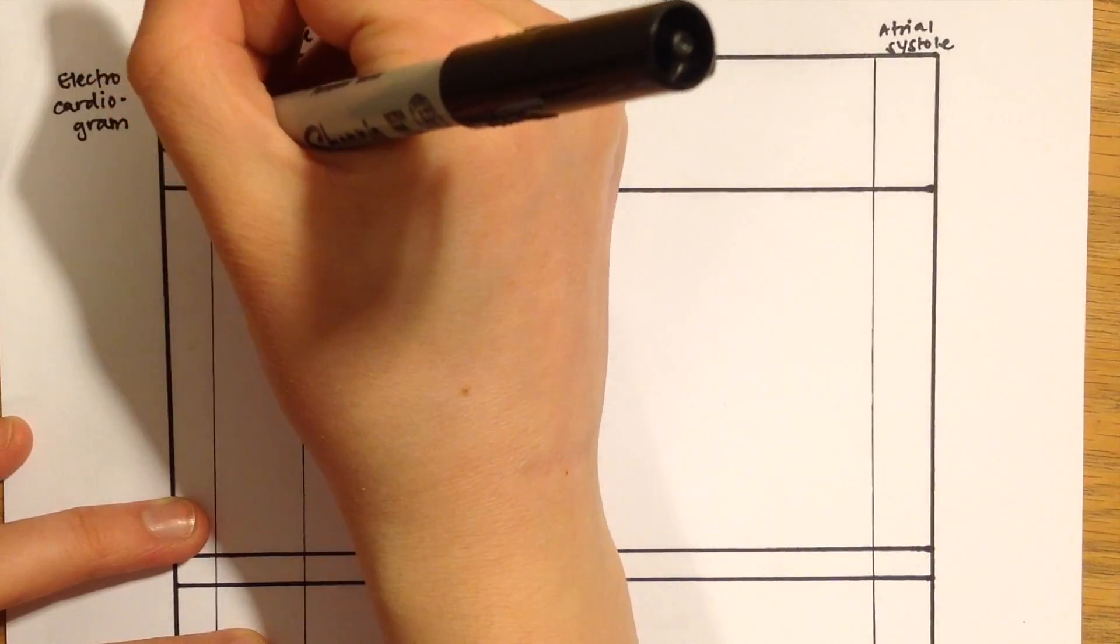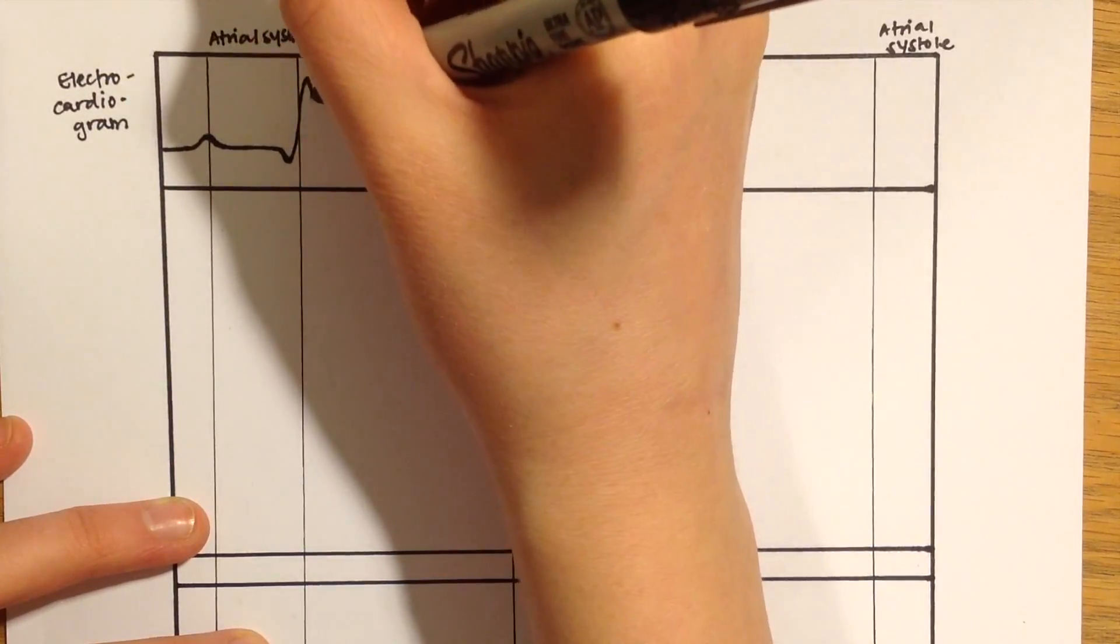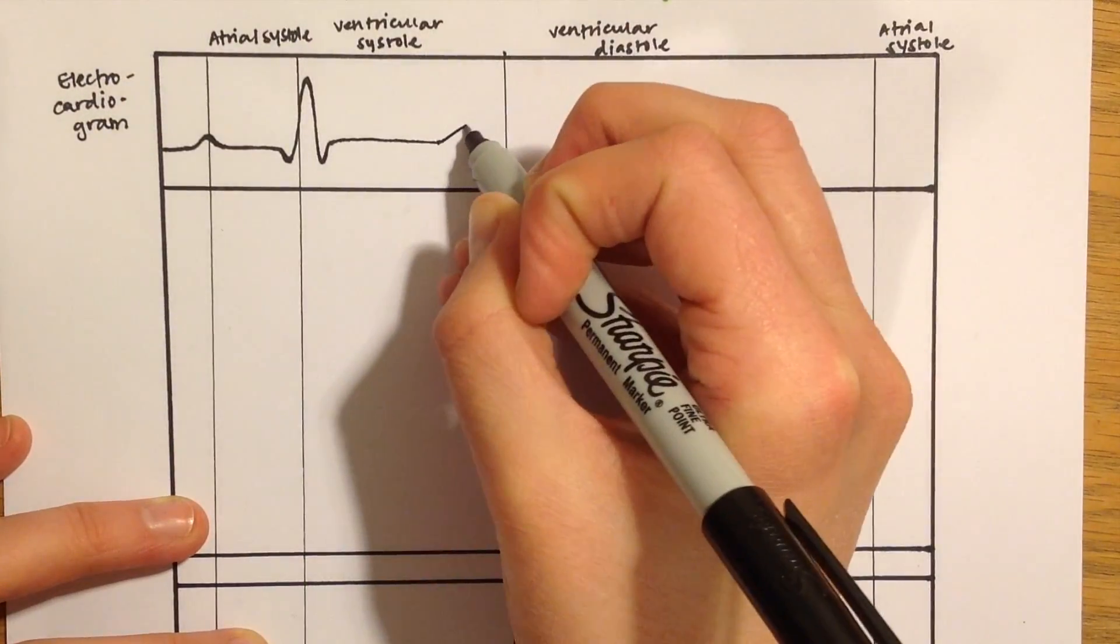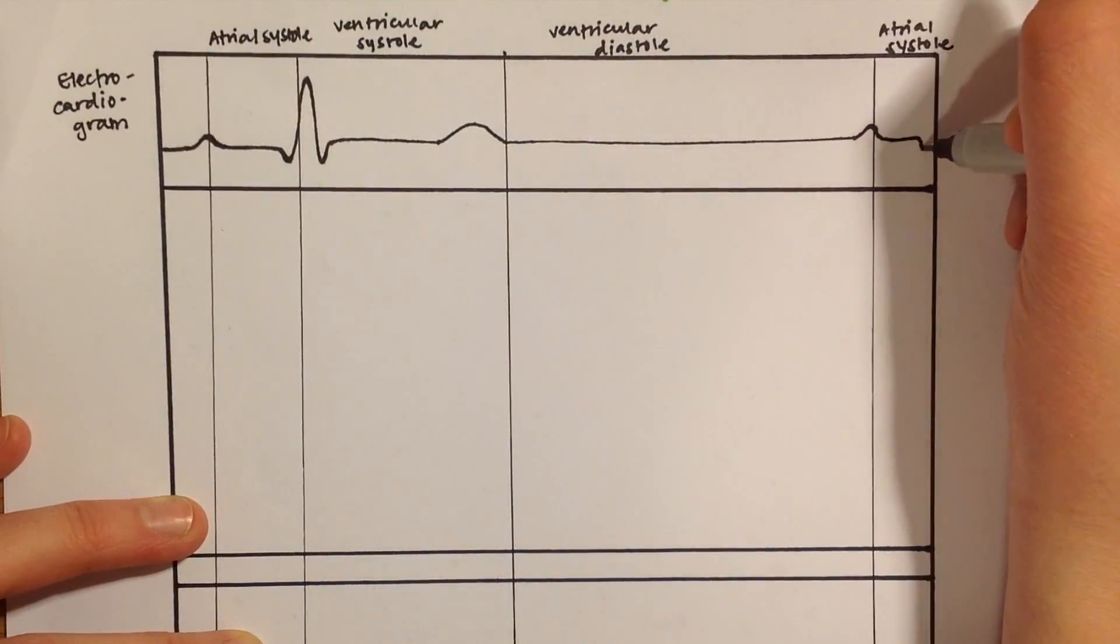On the top part of the diagram, we have the results of an electrocardiogram graphed. So we can see the P wave, the QRS complex, and the T wave to compare to the other parts of the diagram that will be drawn later.